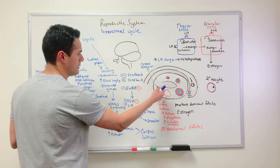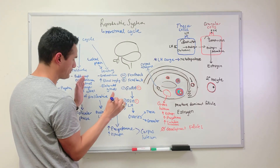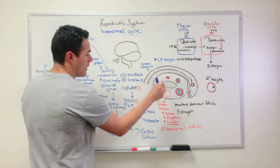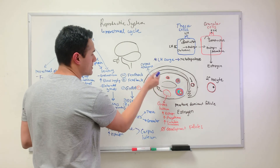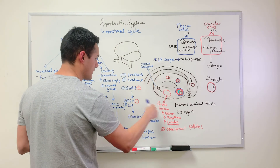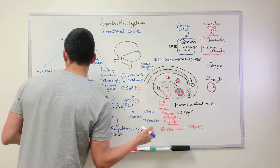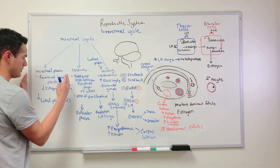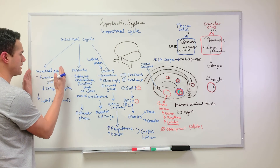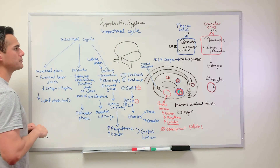Once the corpus luteum becomes the corpus albicans, that's when the hormone levels start to decrease. Then the functional layer is going to shed and we enter back into the menstrual cycle.